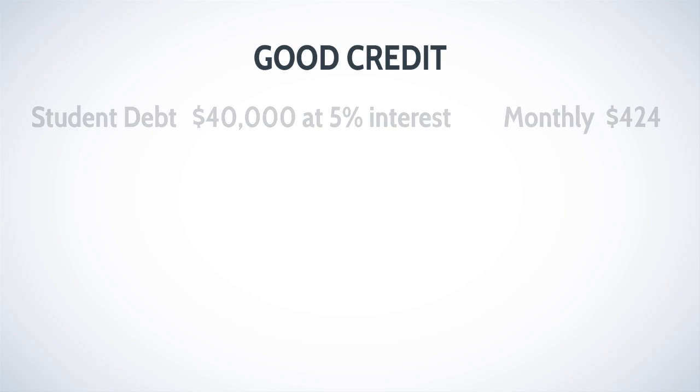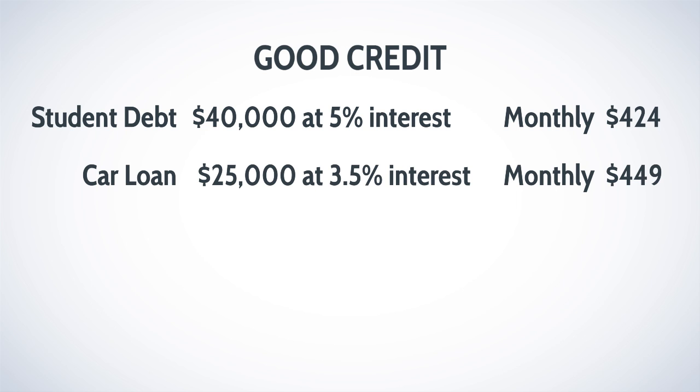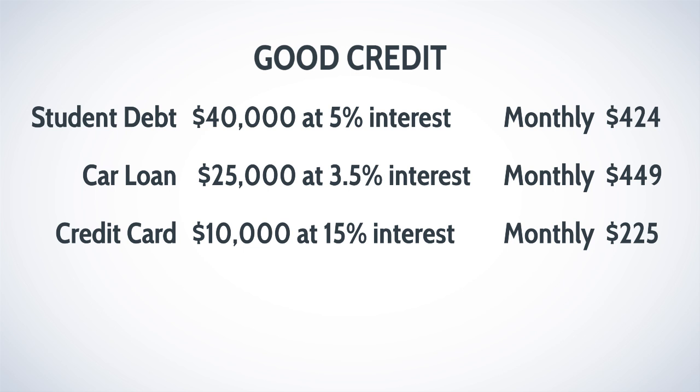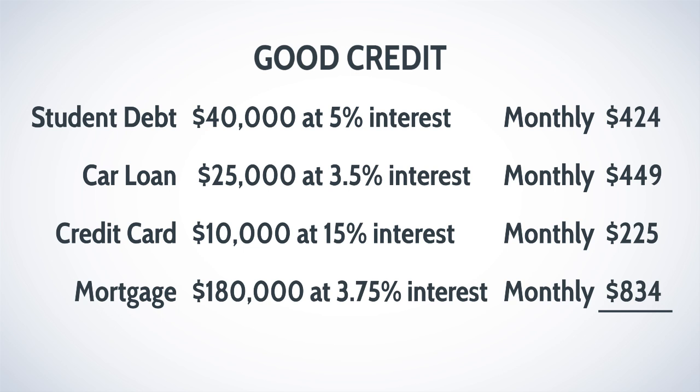And that's a lot of money. Let's look for good credit now. Good credit. Same thing. $40,000 at 5%, that's $424. That $25,000 car loan at 3.5% at $449, the credit cards at 15%, $225, and the home mortgage at 3.75% at $834. That totals $1,938.